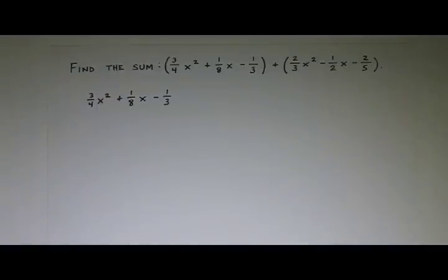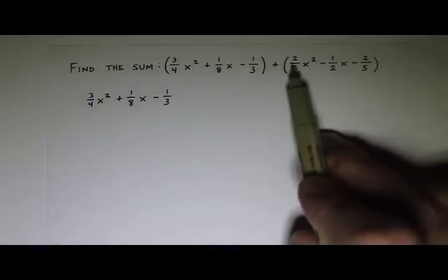And then I'm going to write the second polynomial underneath. I'm going to line it up so the like terms are underneath each other. The first term is the 2/3 x² - 1/2 x, and then the last term is -2/5, and I'm going to add.